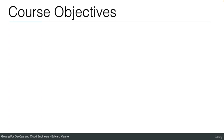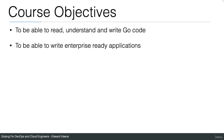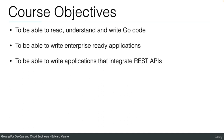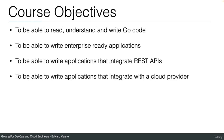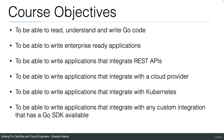What are the course objectives? To be able to read, understand and write Go code. To be able to write enterprise-ready applications. To be able to write applications that integrate with REST APIs, with a cloud provider, and with Kubernetes. And to be able to write applications that integrate with any custom integration that has a Go SDK available. Once you've seen enough examples, you should be able to write Go applications using any SDK available, because you should know how to do it or how to figure it out.